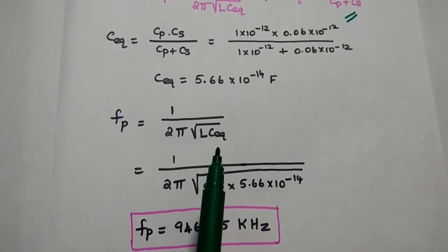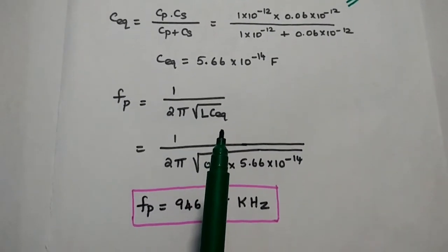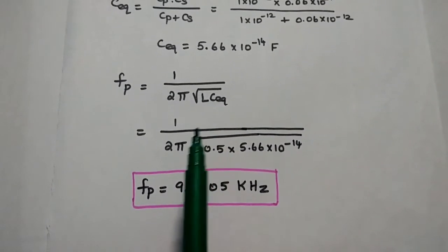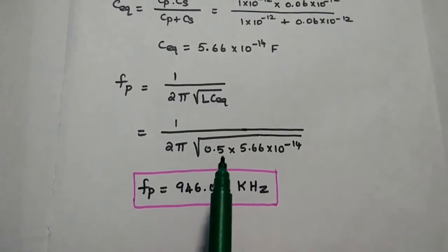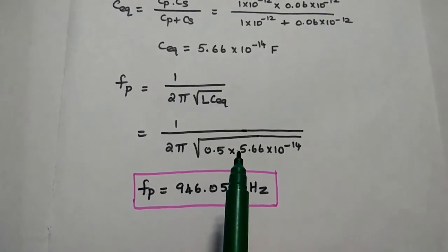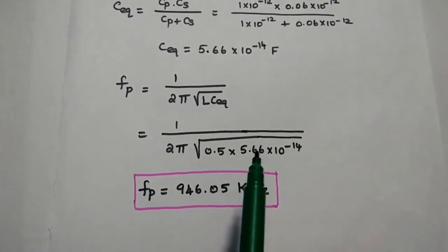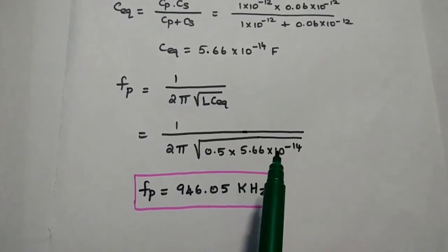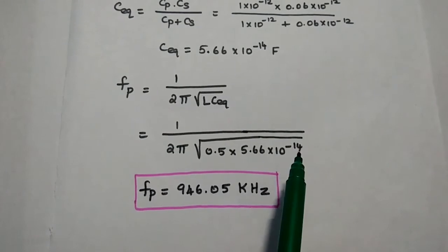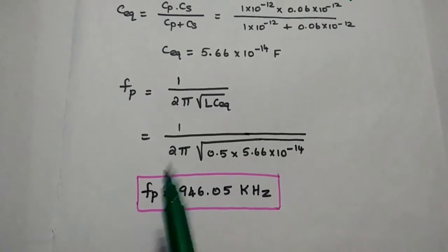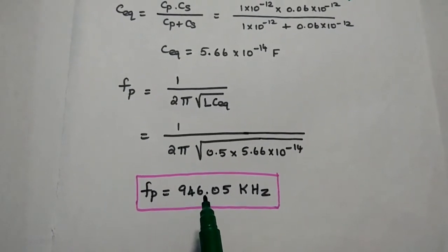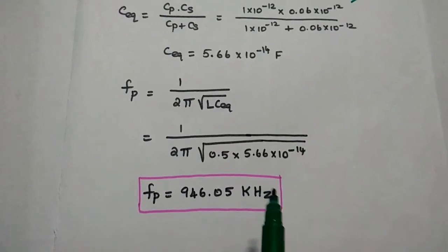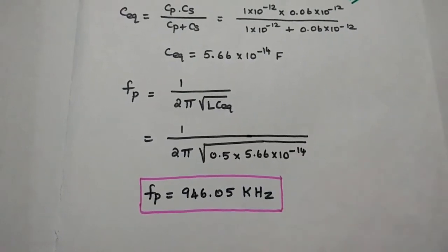After finding C equivalent, we substitute into the formula: Fp is equal to 1 by 2 pi square root of 0.5 into 5.66 times 10 to the power of minus 14. The answer is Fp equal to 946.05 kilohertz.